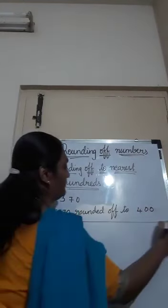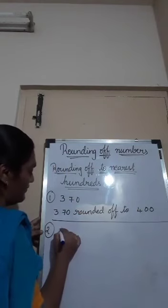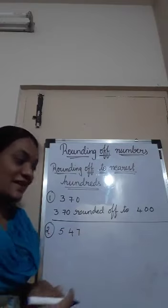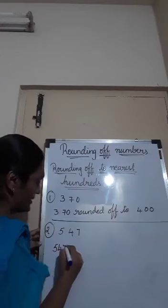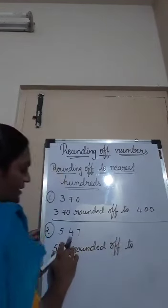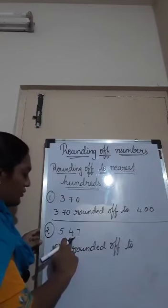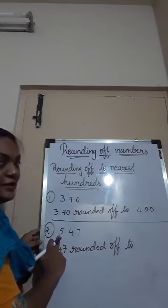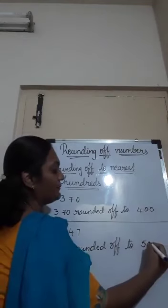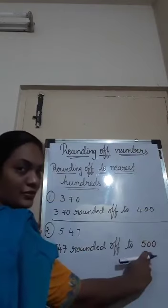Now let's see one more example: 547. Same here — 547 rounded off to nearest 100 depends on the tens place. Tens place has 4, so we do not need to change the hundreds place value. Hundreds place stays the same as 5, and tens and ones become 0. So 547 rounded off to nearest 100 is 500.